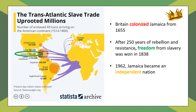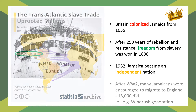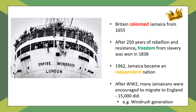Really importantly, after the end of the Second World War, many Jamaicans were encouraged to migrate to England. In fact, nearly 15,000 people did, to help rebuild the country after the devastation of the war. An example of this is the Windrush generation — the first group of migrants who came from the Caribbean to England, having been invited to do so, to settle, to live, and to work.